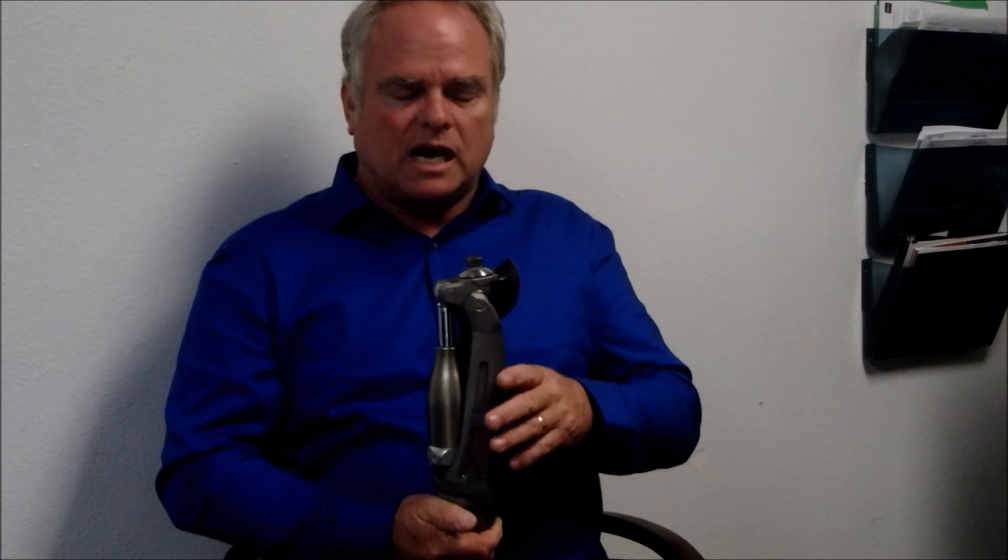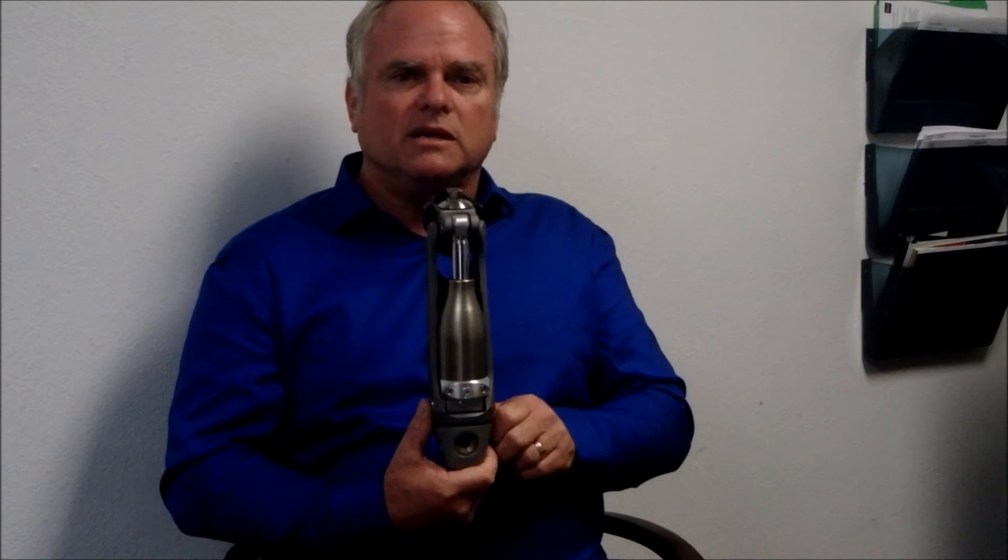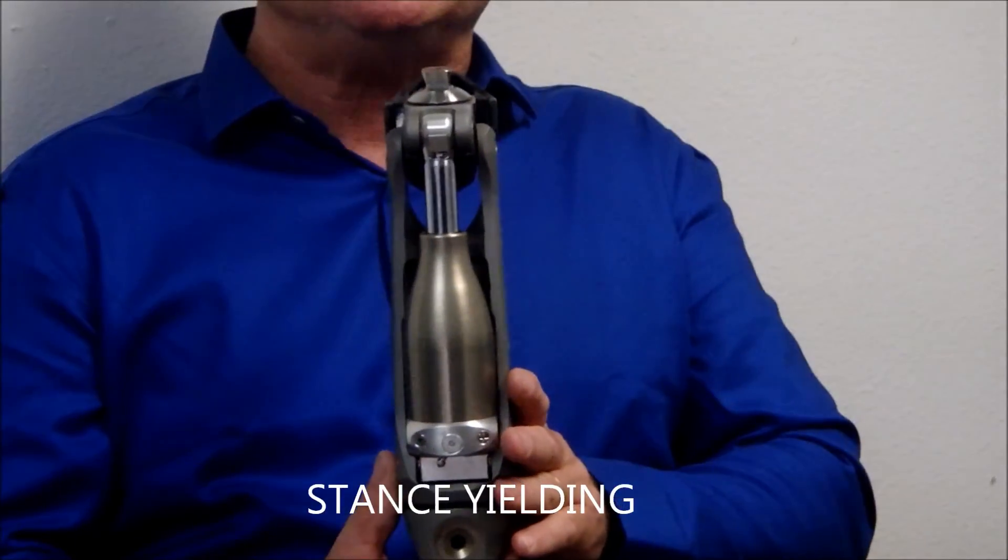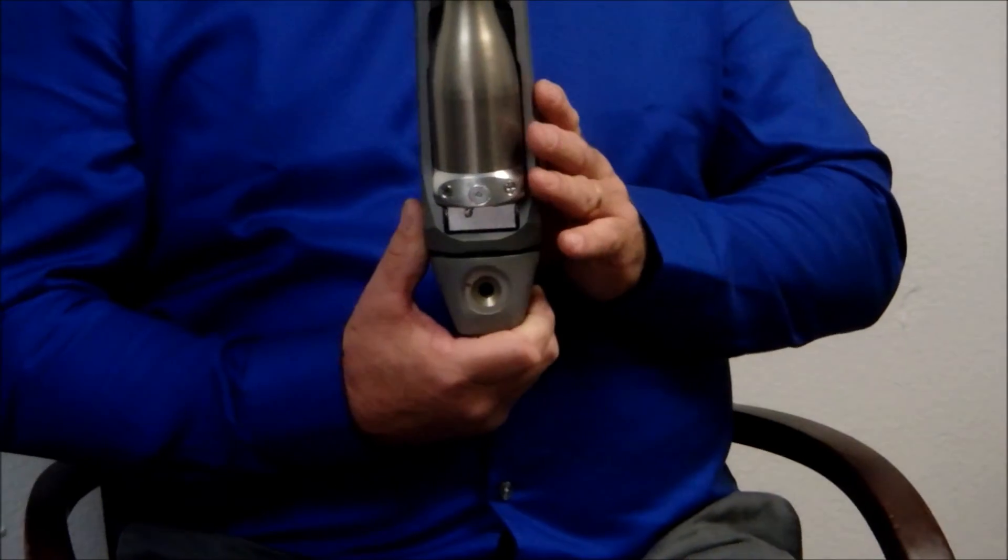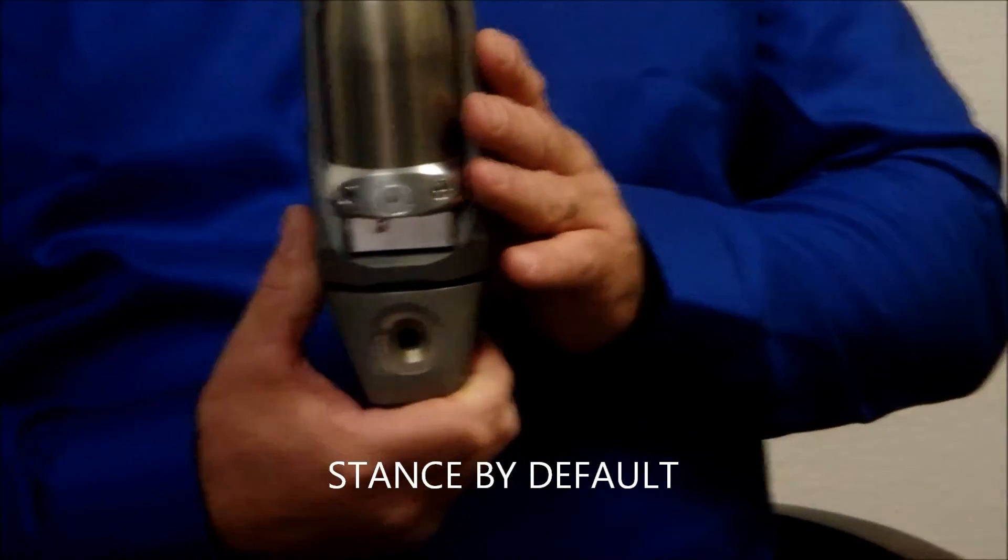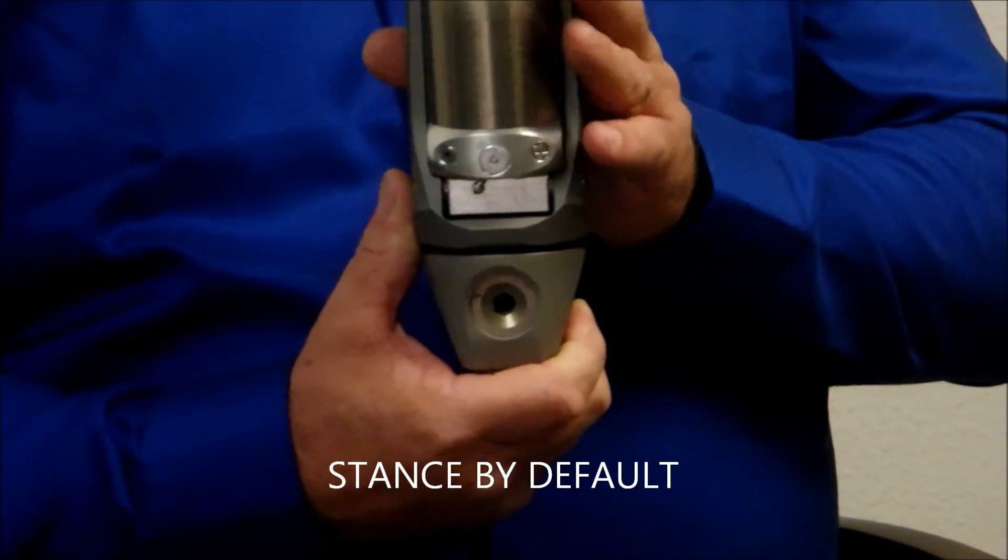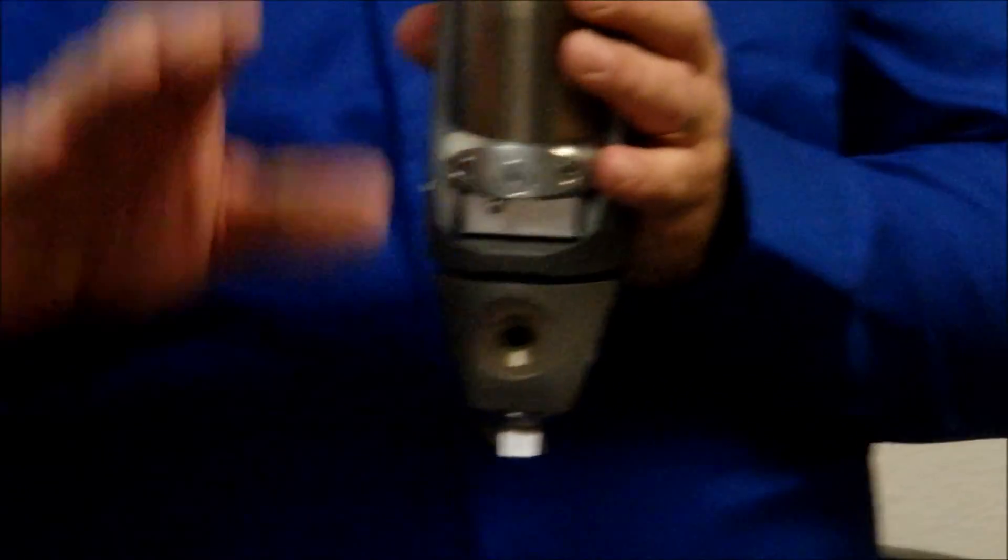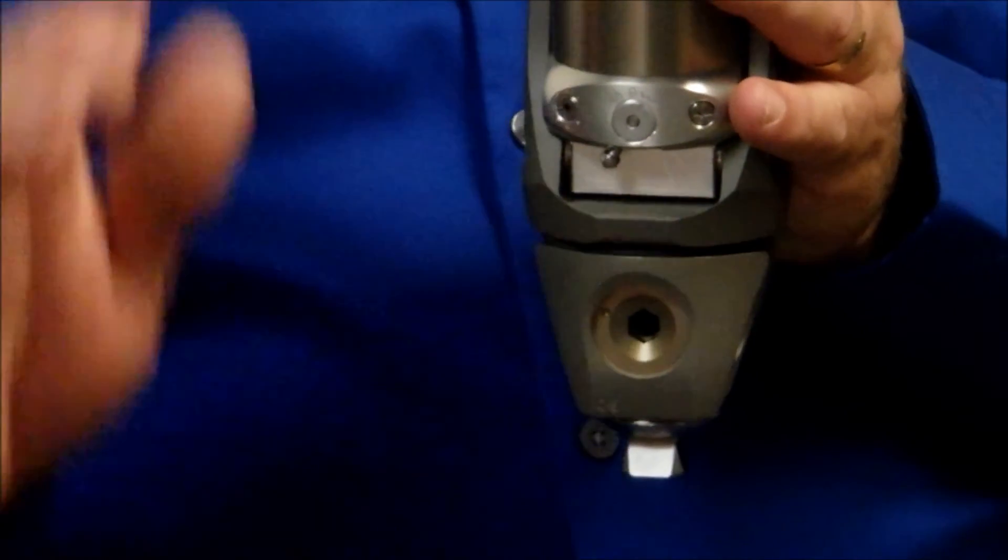First item as far as adjusting the knee is we are now going to talk about stance yielding. This knee is stance by default. So, like in many other knees, what we're going to do to adjust the knee is we're going to have the patient stand and sit.